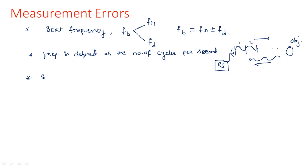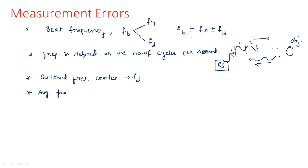When discussing the FMCW altimeter, two different blocks are specially designed to calculate range frequency and Doppler frequency. One is a switched frequency counter, which determines the value of FD, and another is an average frequency counter, which determines the number of cycles related to FR.